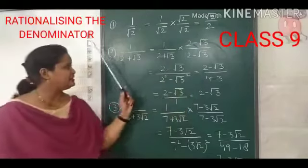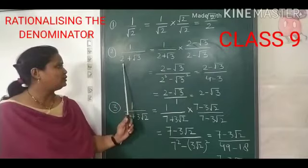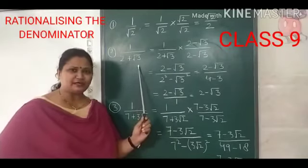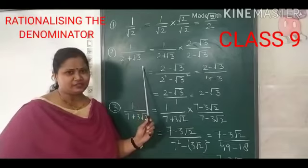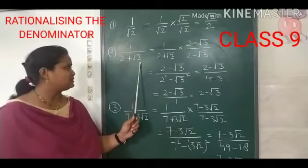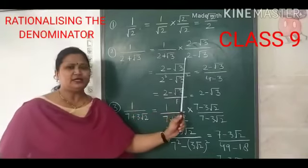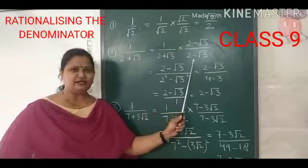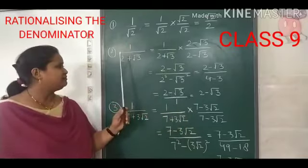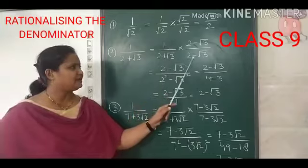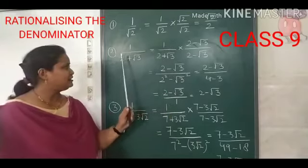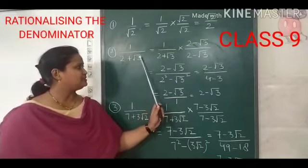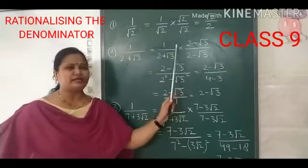Let me take another example. Here, there is another number 1 upon 2 plus root 3. If I want to rationalize this number, then I have to multiply both numerator and denominator by the conjugate of this number. Conjugate means, if there is 2 plus root 3, then I have to multiply it by 2 minus root 3 — I have to just change the sign of this number. Here it is 2 plus root 3, and I have taken 2 minus root 3. If there was a minus sign, we can replace it by a positive sign, and if there is a positive sign, we can change it to a negative sign. So I multiply by 2 minus root 3 in both numerator and denominator.